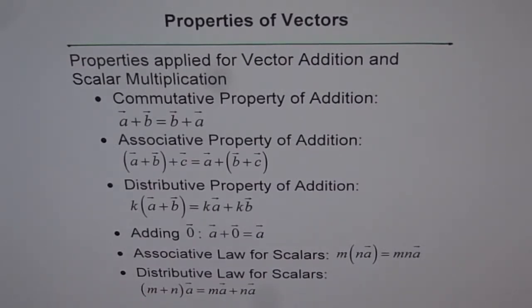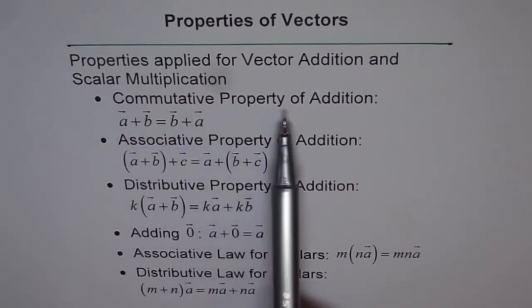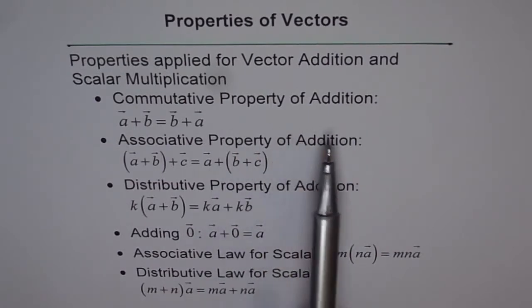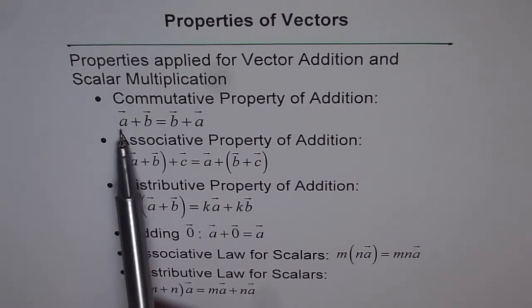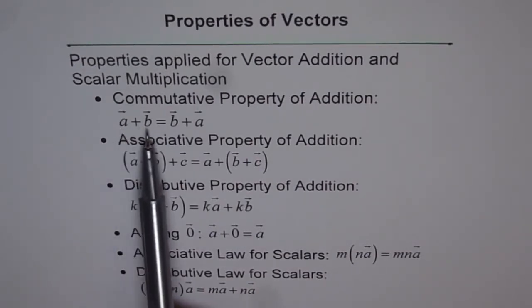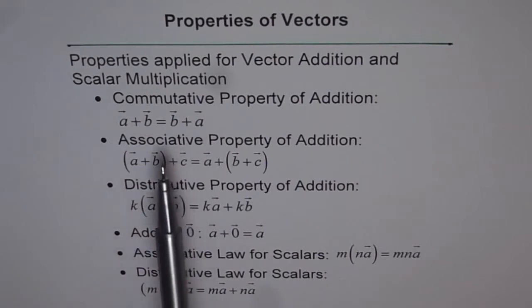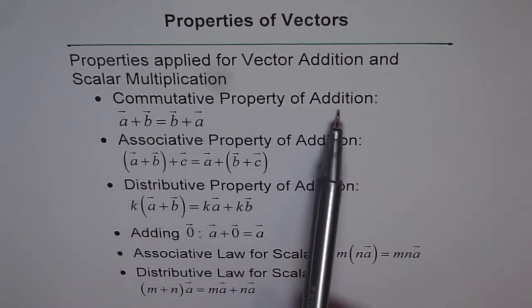I have seen students just not noticing it and missing out on some objective type questions. As you can see here, the first three, their names are commutative property of addition. We are very familiar with commutative, associative and distributive laws in algebra. Now, here, we are talking about vectors. So basically, we have two vectors here, A and B. So vector addition is commutative and therefore, we have a property, commutative property of addition.